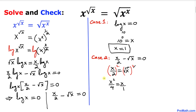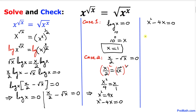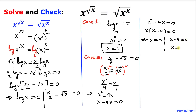Cross multiplying gives x squared equal to 4x. Moving 4x to the left: x squared minus 4x equal to 0. Factoring out x: x times (x minus 4) equal to 0. So we can write x equal to 0 or x minus 4 equal to 0, which means x equals 4. We get two solutions from this case.